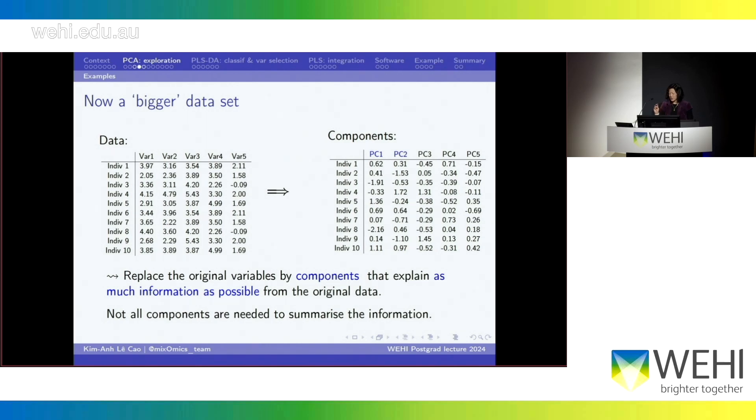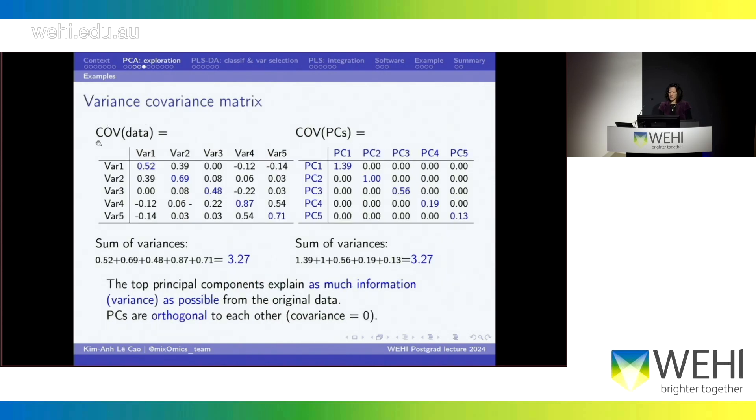So I talk about information and variance. If you calculate the covariance of your original data, this is what you get. So you have, on the diagonal, you have the variance of each variable, and outside the diagonal, you have the covariance, which is very similar to a measure of correlation.